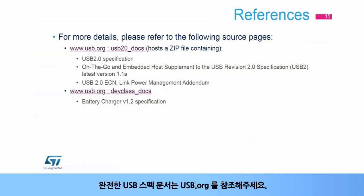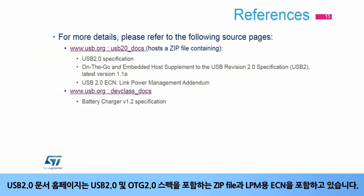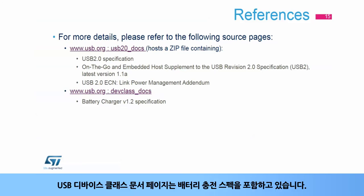For complete USB specification documents, please refer to USB.org. The USB 2.0 document home page has a zip file containing the USB 2.0 and OTG 2.0 specifications and an ECN for LPM. The USB device class documents page has the battery charger specification.